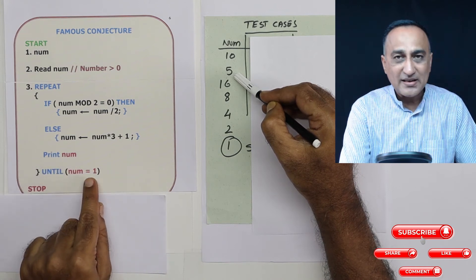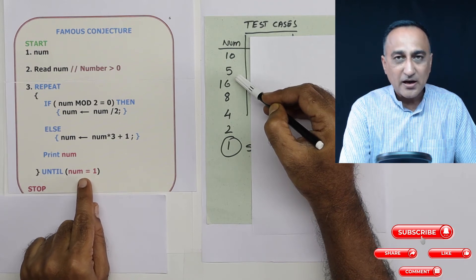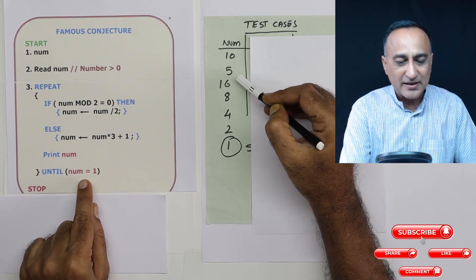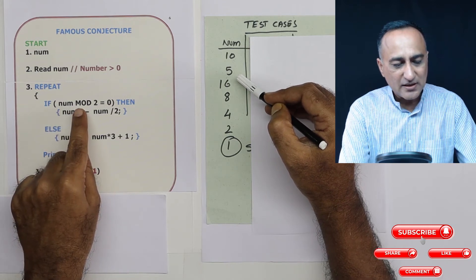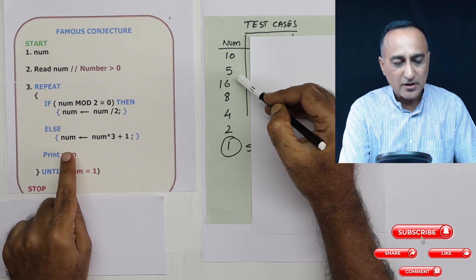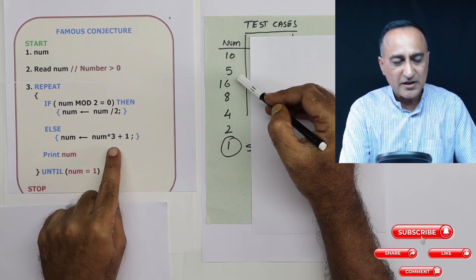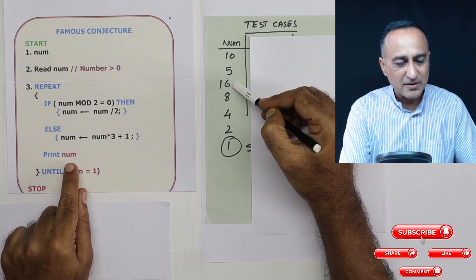5 equals 1 is not true, it is false. So this will only repeat until the number becomes 1. 5 mod 2 is 0 is false. Now automatically if it is not even it has to be odd. So 5 into 3 is 15 plus 1, so number becomes 16. Now I am printing the next number is 16.